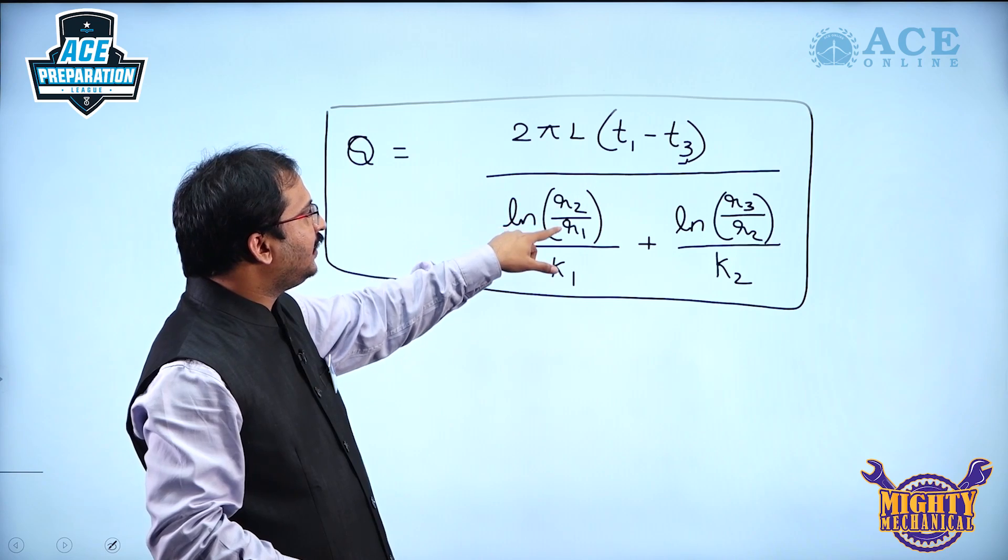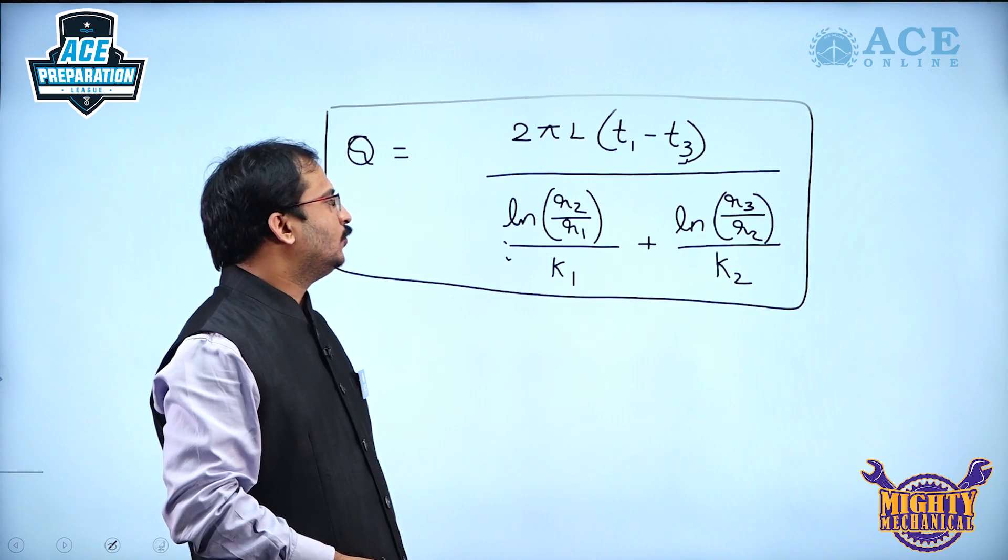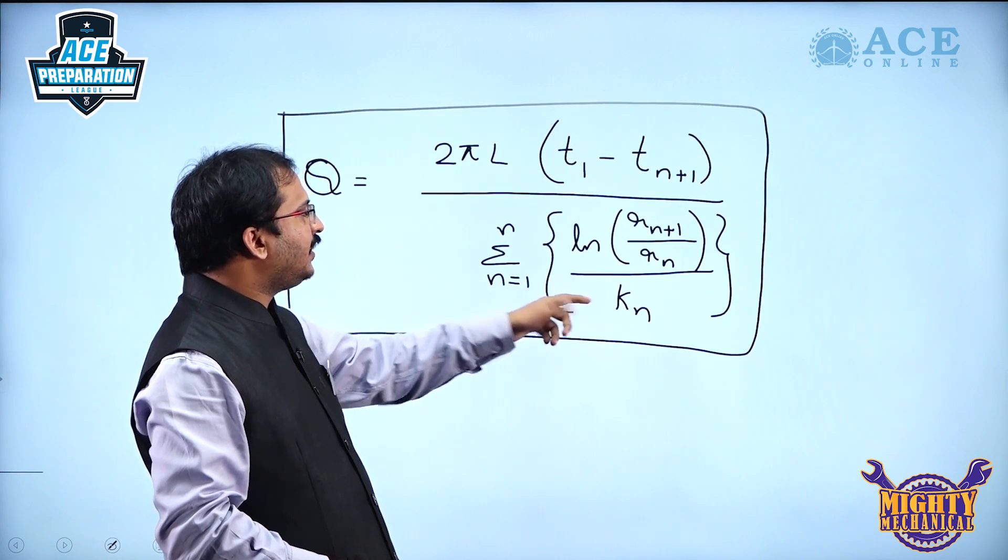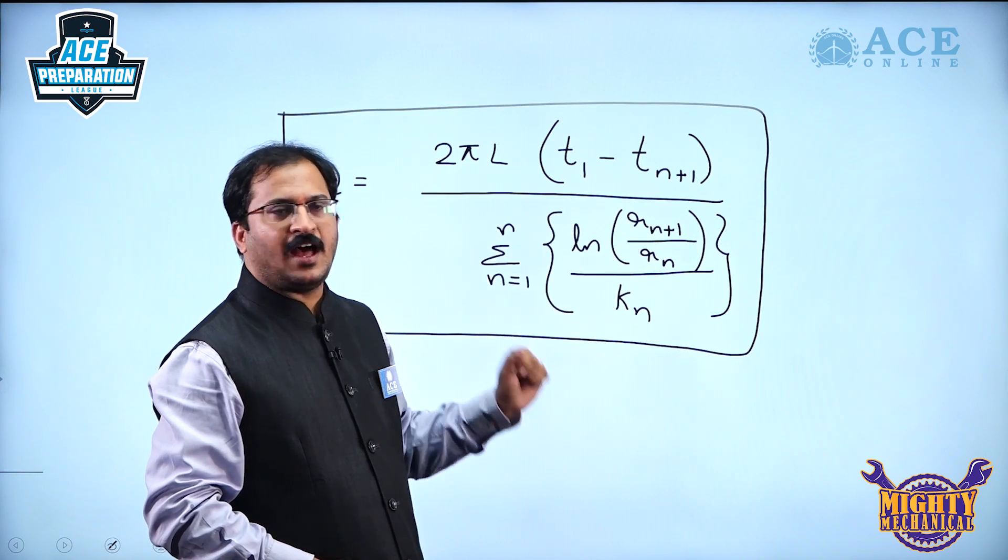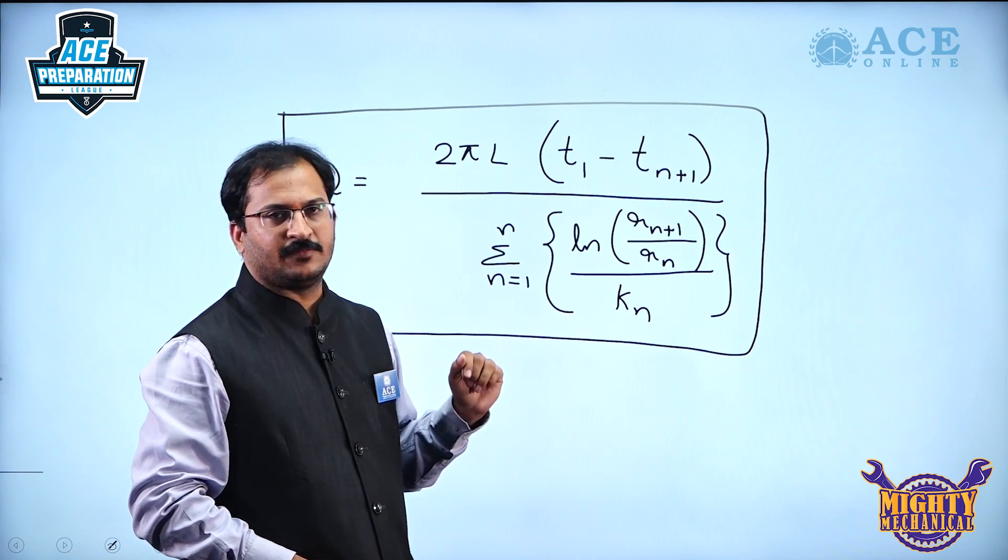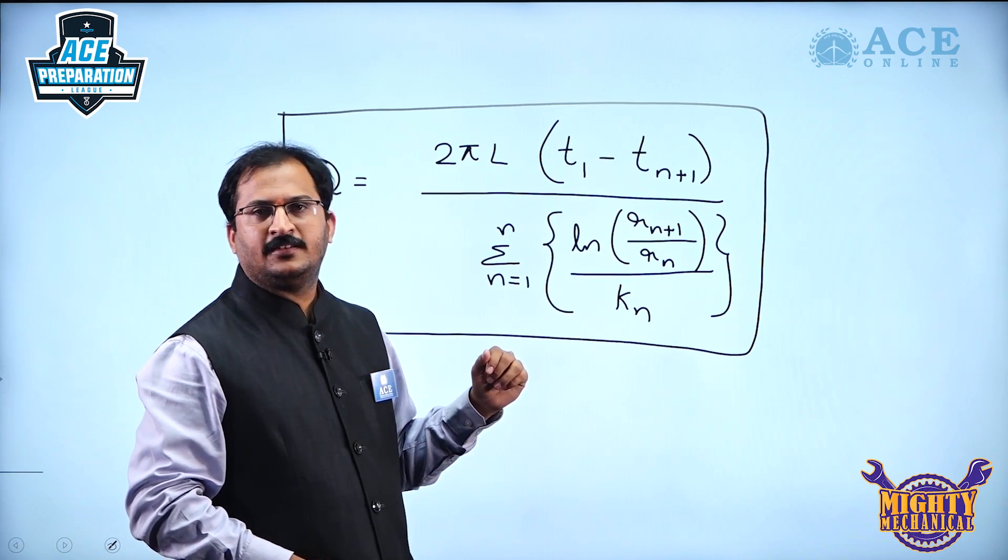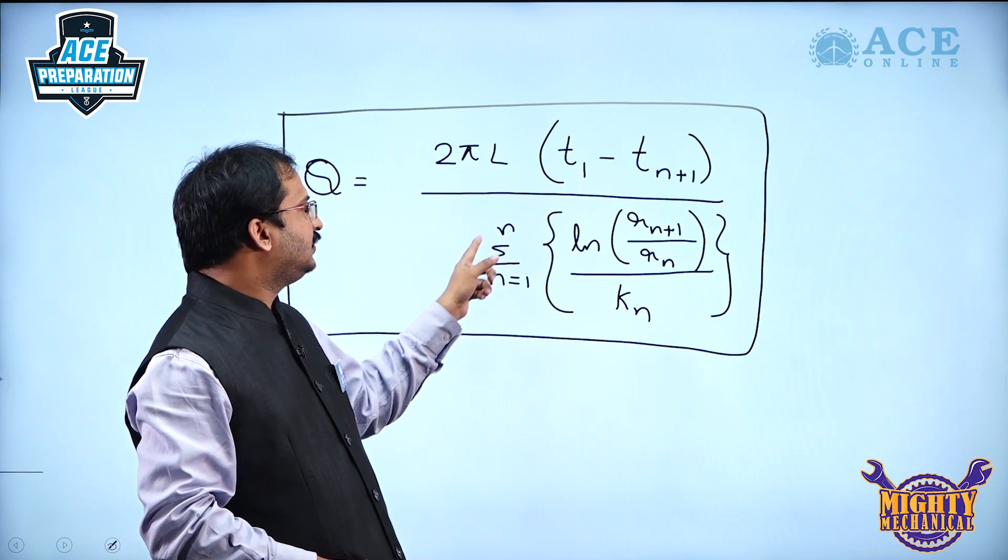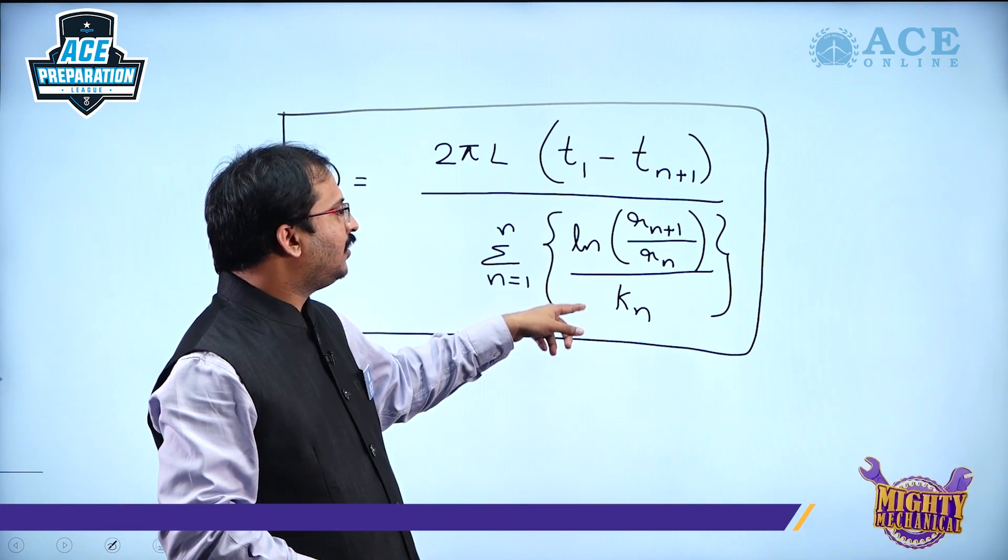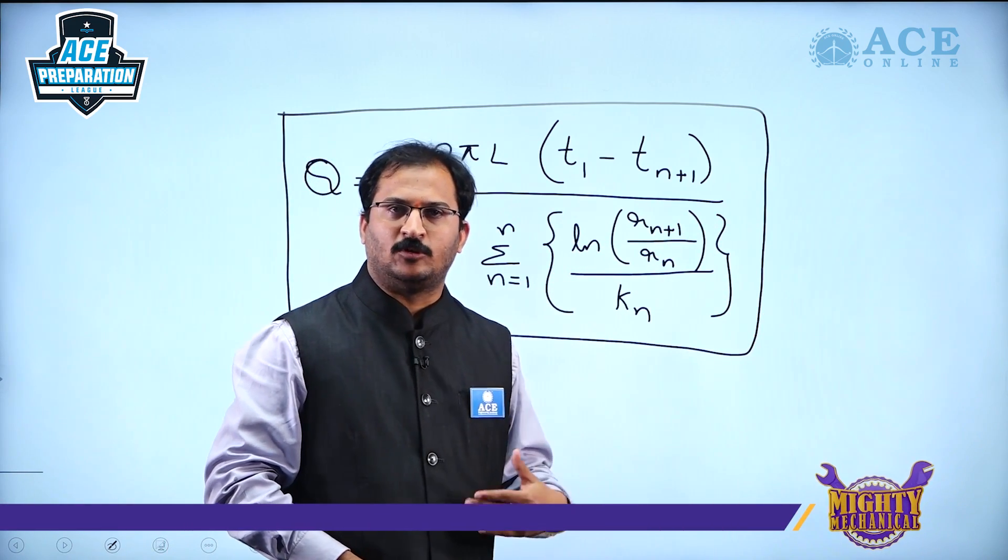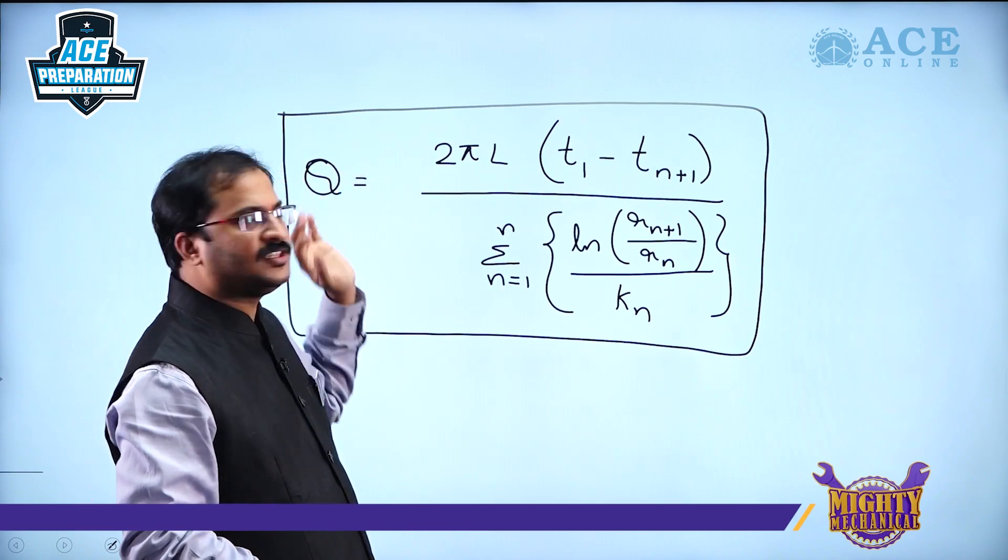In the denominator we are getting R2 by R1 by K1 and R3 by R2 by K2. So that means if n equals 1, then in the numerator it will be R2 and you will get K1. When there is only 1 cylinder, this formula will be ln(R2/R1)/K1. If there are 2 cylinders, as there is sigma n equal to 1 to n, you can say ln(R2/R1)/K1 plus ln(R3/R2)/K2. Depending upon the number of cylinders available, you can use this as the generalized formula.